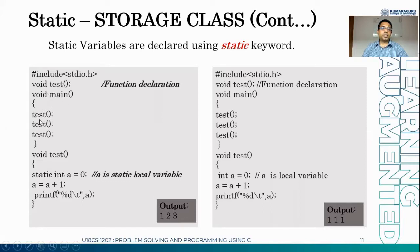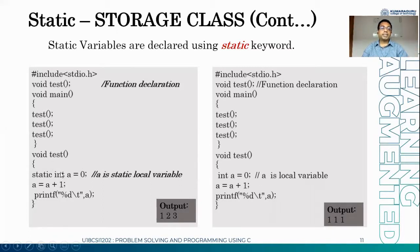On the left side, the header file is included, and 'y_test' is a function. Within main, I'm calling this function three times. Inside the function, I'm initializing static integer a equal to zero — a is a static local variable. Then a equals a plus one, and I print the value.